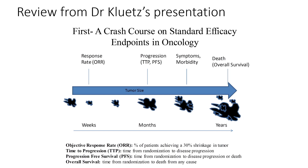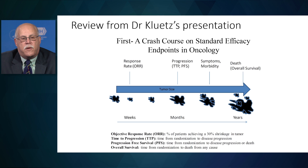The oncology endpoints for clinical trials are a good example of how the FDA uses other than overall survival as an endpoint. Dr. Klutz reviewed response rate, progression-free survival, symptom-related events, and overall survival as possible endpoints. The ultimate endpoint is overall survival, and the other endpoints are surrogates for overall survival, and surrogate markers depend on whether or not they predict for overall survival in terms of whether a drug can be approved.